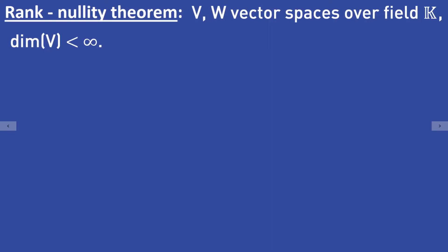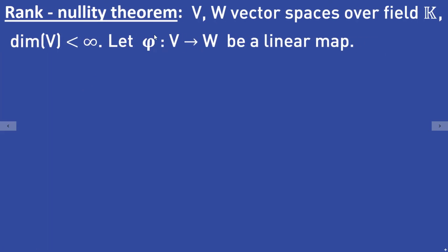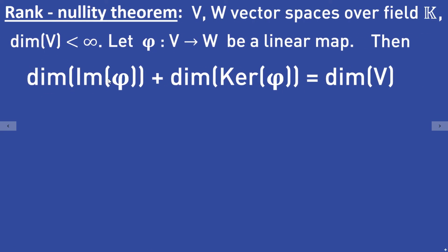Let V and W be vector spaces over a field K, where the vector space V has a finite dimension. Let phi from V to W be a linear mapping. Then the dimension of the image of phi plus the dimension of the kernel of phi is equal to the dimension of the vector space V.